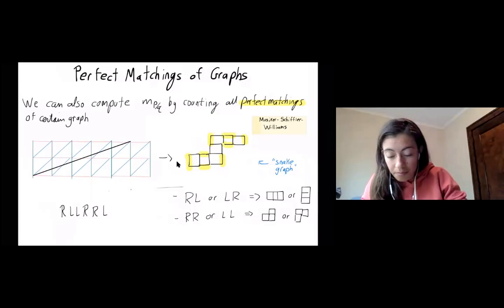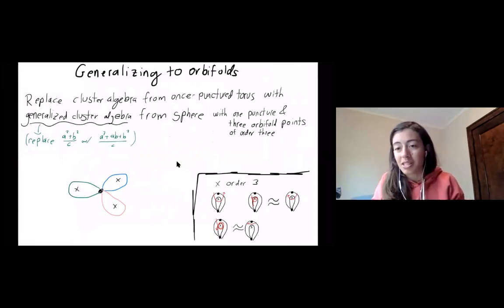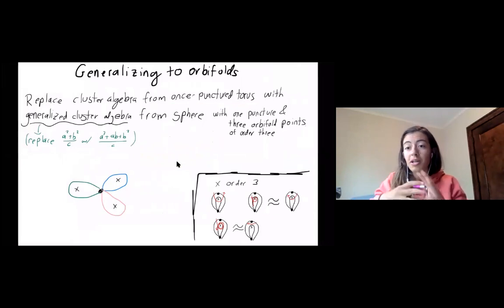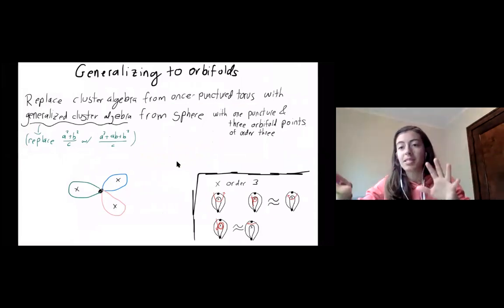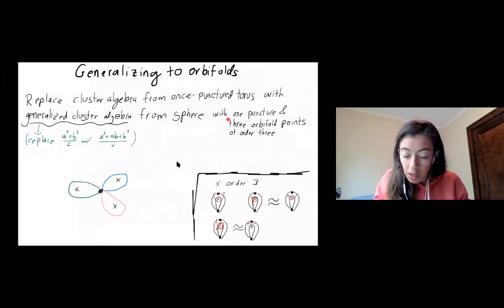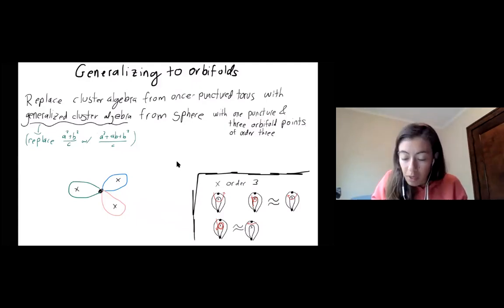So now for the generalization. So there's a lot going on here. So essentially, we're going to replace the cluster algebra with what's called a generalized cluster algebra. So what that kind of means is we're going to replace the surface we had, the once punctured torus, which its universal cover had the nice grid, and then it made sense to talk about slopes. We're going to replace that with a sphere that has one puncture and three orbifold points of order three. What is that? So right, orbifolds are surfaces, or they're really quotients of surfaces, or probably marginally manifolds under group actions. So when we say we have orbifold points, those are sort of like we have a group action around the orbifold point.